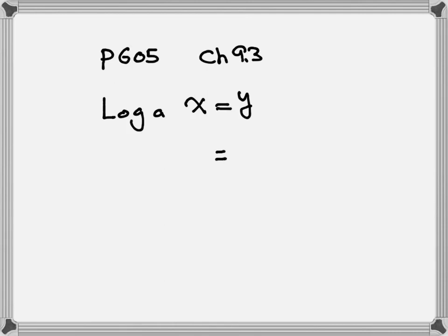The x, you go straight down. Then after that, you take the base. The base is the little a. The base is going real fast to the other side, becoming a big A. Then after that, because it goes so fast, it bumps the y up to become the exponent. So this is how you change from log to exponential format.